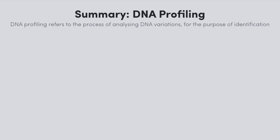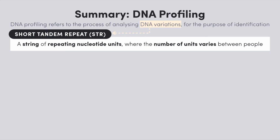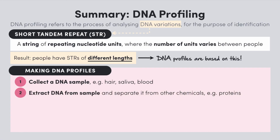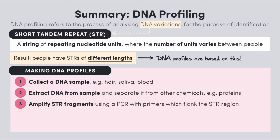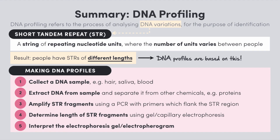In summary, DNA profiling refers to the process of analyzing a person's DNA for variations so that we can identify them. The genetic markers most commonly used are short tandem repeats. STRs are short non-coding regions of DNA consisting of a string of repeating nucleotide units; the number of repeats varies between different people and we use these length differences to create unique DNA profiles. The process involves collecting and extracting DNA, using PCR with flanking primers to amplify STRs, then running fragments through gel or capillary electrophoresis to separate them by size. Check out the video on the applications of DNA profiling for your exams — see you there.